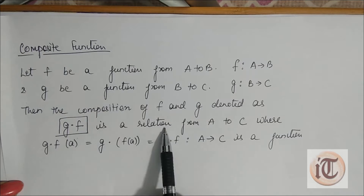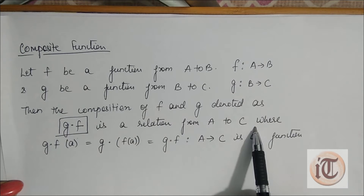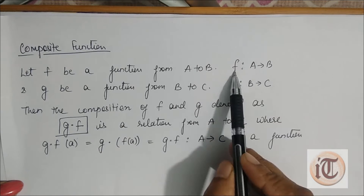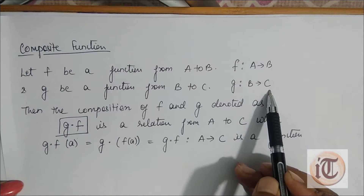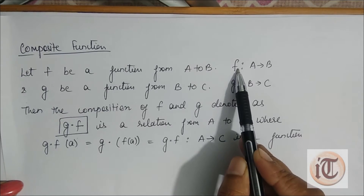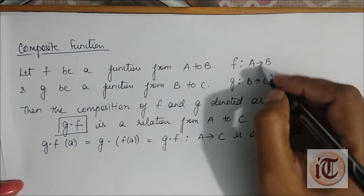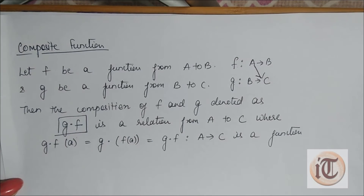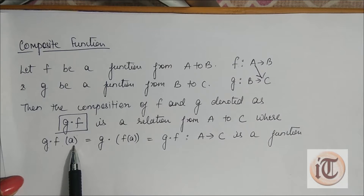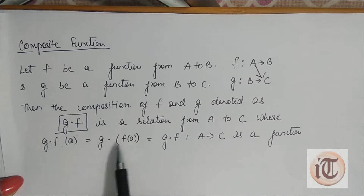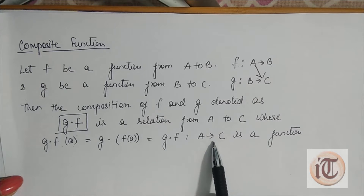g dot f is a relation from A to C. Why? Because f is a function from A to B and g is a function from B to C. If we have to find out the composition g dot f, this gives a function from A to C, which we write as g dot f of a equals g of f of a.